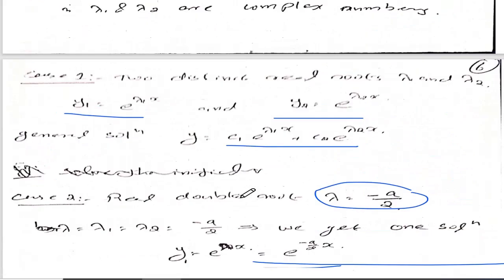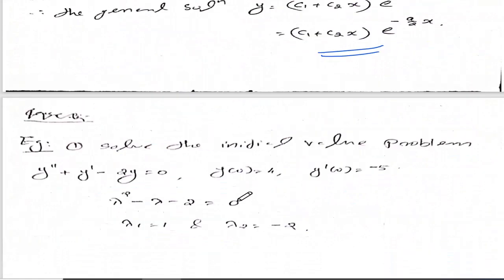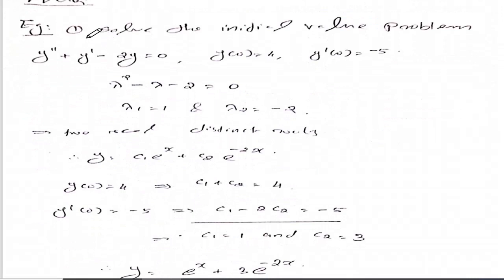First example, solve the initial value problem: y double dash plus y dash minus 2y equal to 0, with initial conditions y of 0 equal to 4, y dash of 0 equal to minus 5.